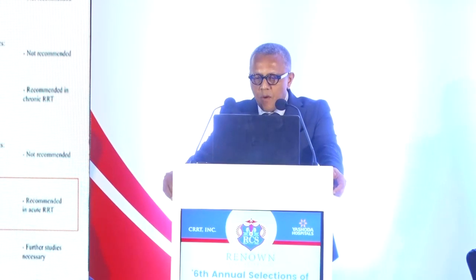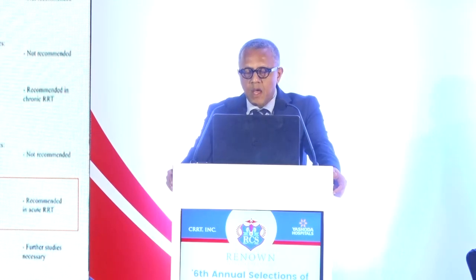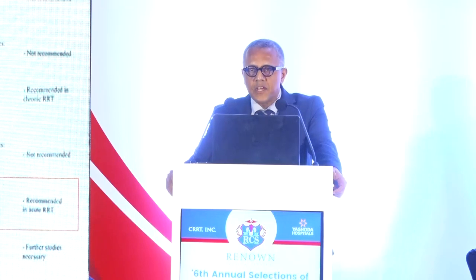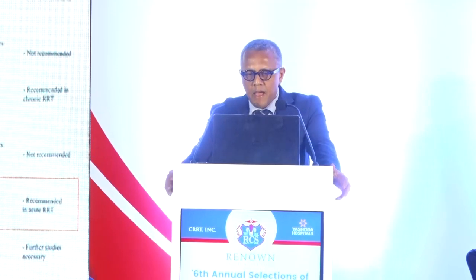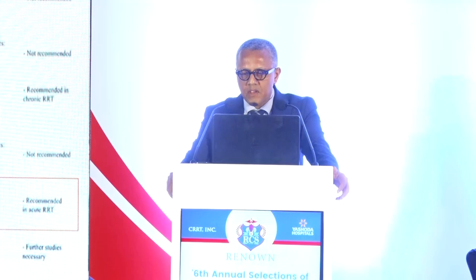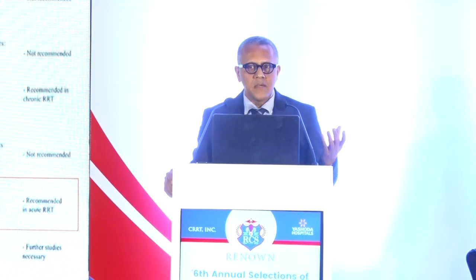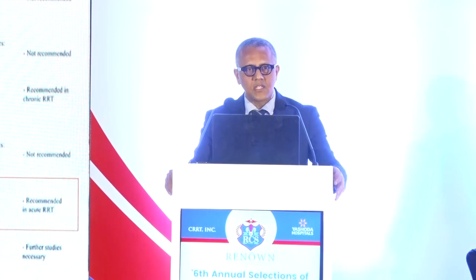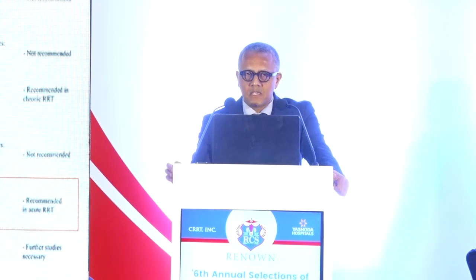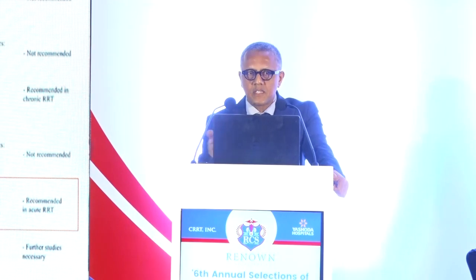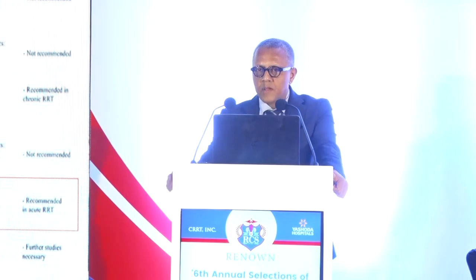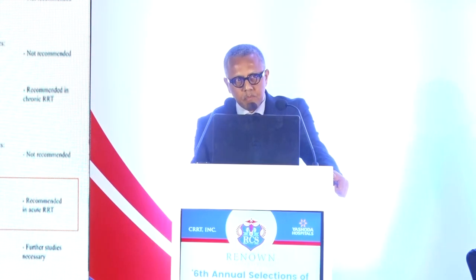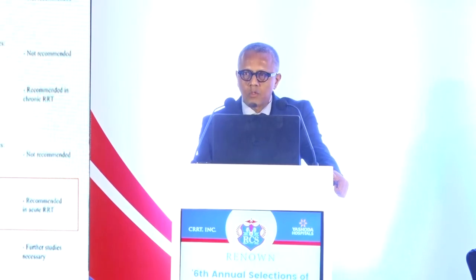Regarding catheter lumen shape and catheter tip design, these also have a bearing on resistance and recirculation characteristics. The cyclic C-shaped lumen and a step-tip or shotgun catheter are preferred designs. The cyclic C design has no sharp edges and the largest ratio of catheter lumen to diameter. With shotgun tips, having at least two to three centimeters between the access port and the return port minimizes recirculation, which has a bearing on the dose of CKRT delivered.